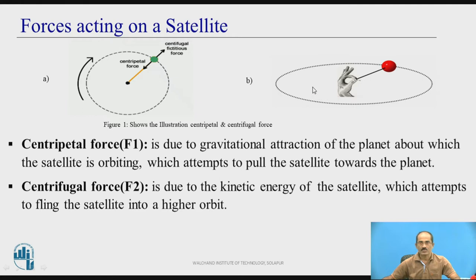We can see the analogy for this. Take a ball and tie a rope to it, hold it in your fingers and try to rotate. One force is towards the finger and the other force is going out from the finger. The force towards the finger is called centripetal force, due to the rope. The force going away from that position, due to kinetic energy, is called centrifugal force.